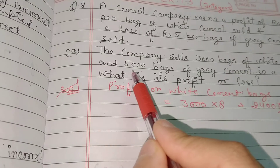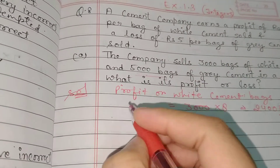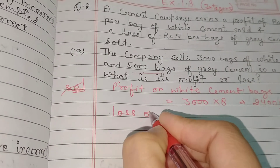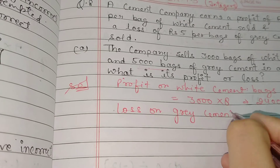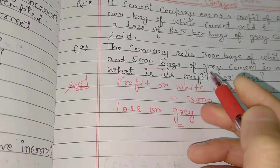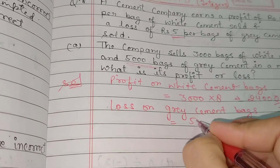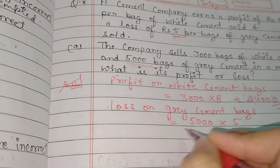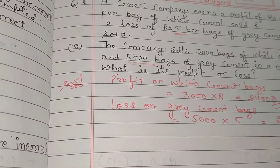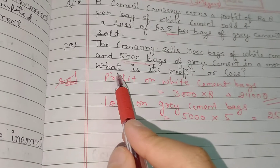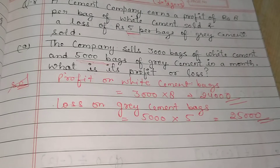Now for the loss: 5,000 bags of grey cement were sold, with a loss of rupees 5 per bag. So 5,000 multiplied by 5 gives a total loss of rupees 25,000 on grey cement bags.